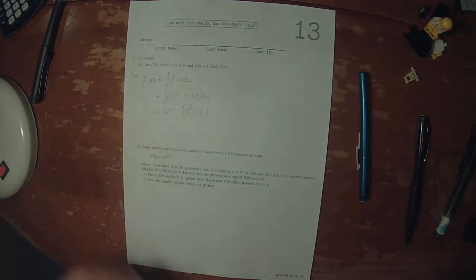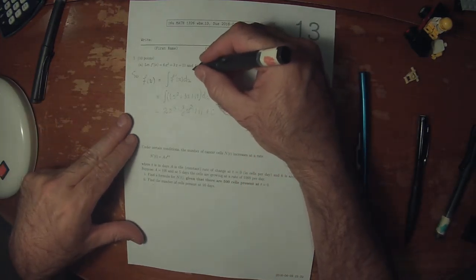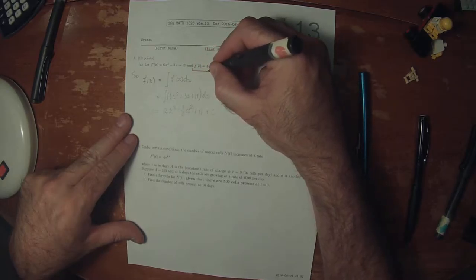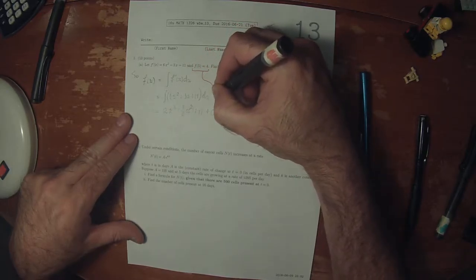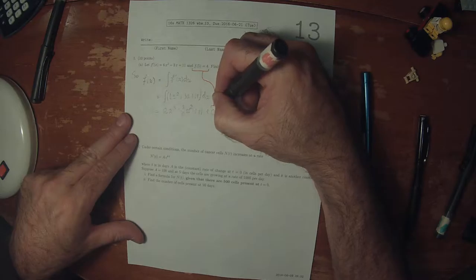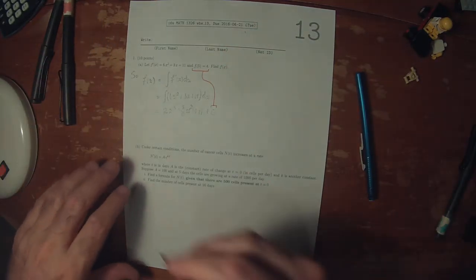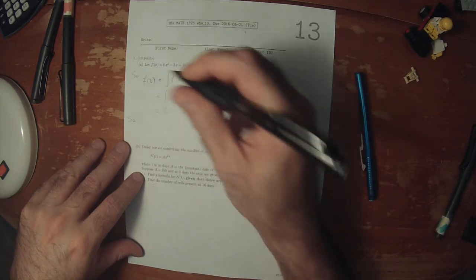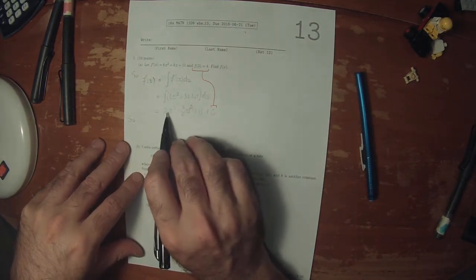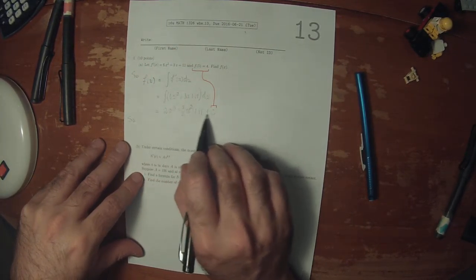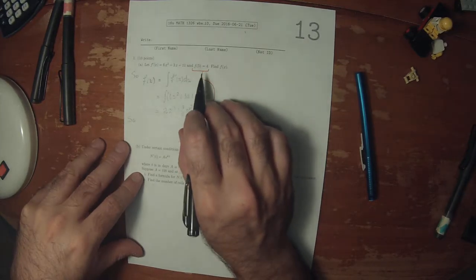So now, to figure out what the unknown constant is, we'll use this initial value. Because we know that when we plug 5 into this, we're supposed to get 4.